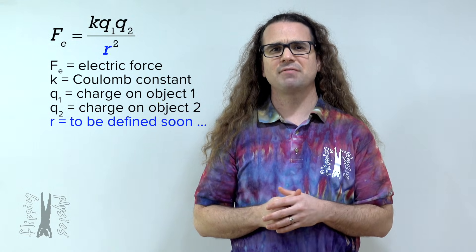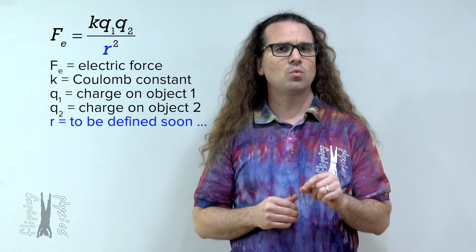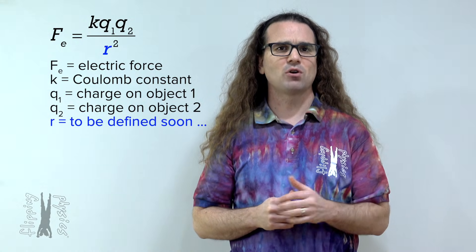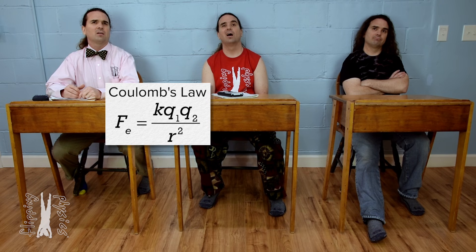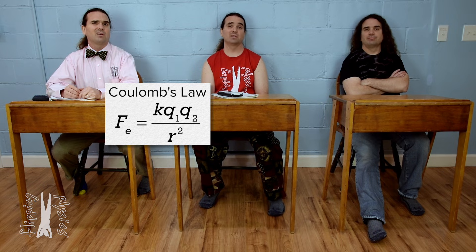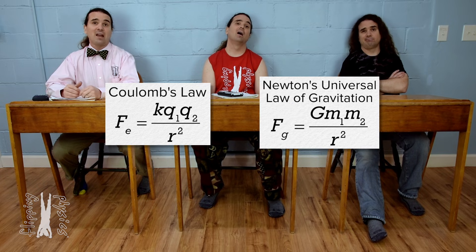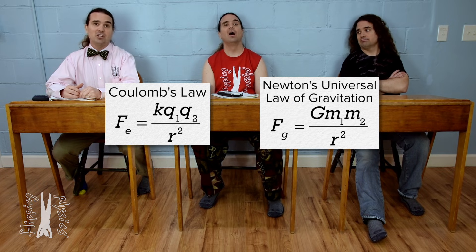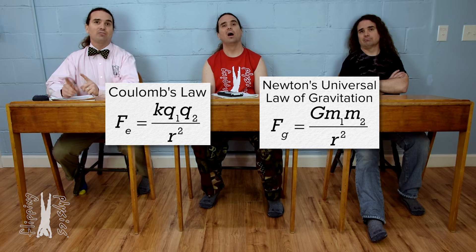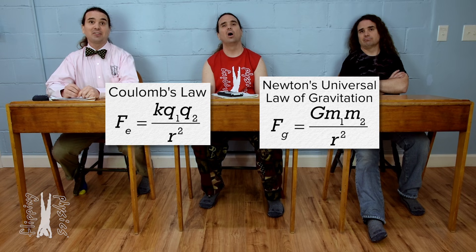Before we specifically define r, I want to know what the general form of this equation reminds you of. Newton's universal law of gravitation — the big G equation — the force of gravity which exists between any two masses. The force of gravity equals the universal gravitational constant, big G, times mass 1 times mass 2, all divided by r squared. I can see how the forms of those two equations are similar.